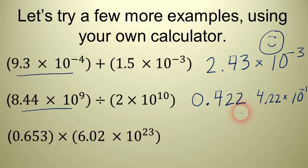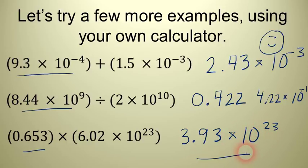Then we have the last problem. Key that in. 0.653 times 6.02 times 10 to the 23rd equals. And you get an answer that is approximately, and do some rounding here. The answer I get is 3.93 times 10 to the 23rd.